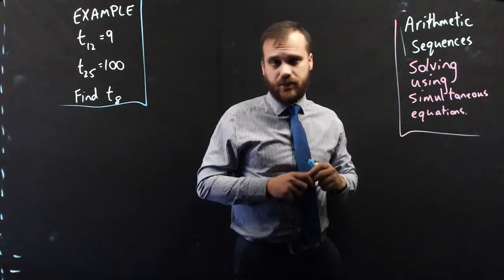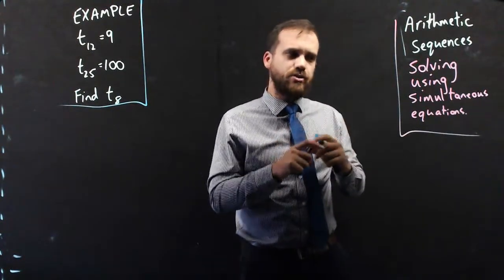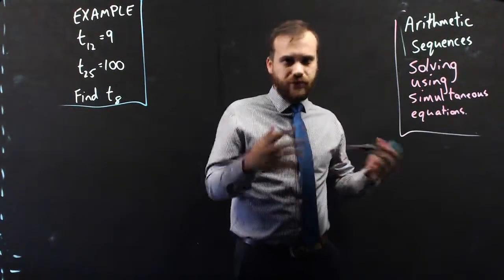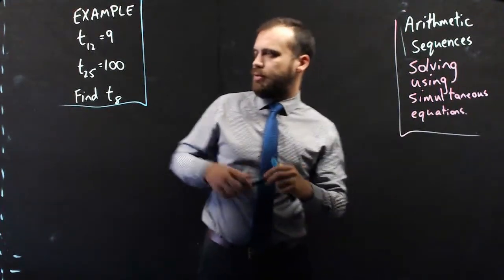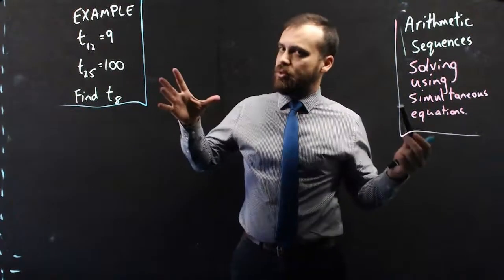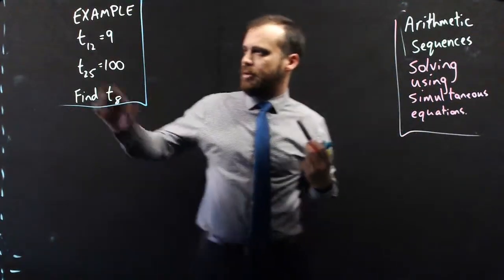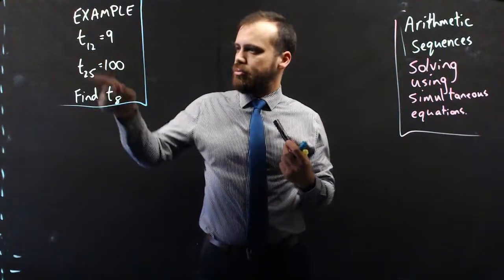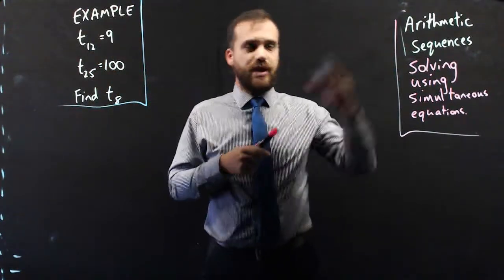A classic in the arithmetic sequences game is questions where you have to use simultaneous equations to solve them. Generally, they look about the same. For example, it might be given in words, but I've shortened it down here. Term 12 is 9, and term 25 is 100. This is of an arithmetic sequence.